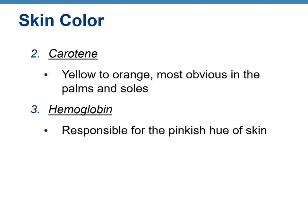Another pigment contributing to skin color is carotene, which is yellow to orange and most obvious in the palms and soles. Your body does not synthesize carotene — it comes strictly from your diet. The last pigment is hemoglobin, responsible for the pinkish hue of the skin.